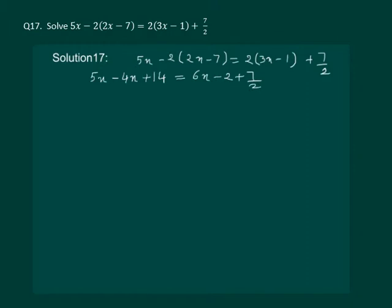Let us try to solve it further. 5x minus 4x will be x plus 14 will be equal to 6x minus 2 plus 7 by 2.